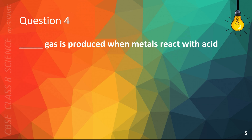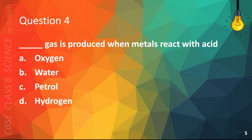Question 4: Blank gas is produced when metals react with acid — A. Oxygen, B. Water, C. Petrol, or D. Hydrogen. The correct answer is D. Hydrogen.